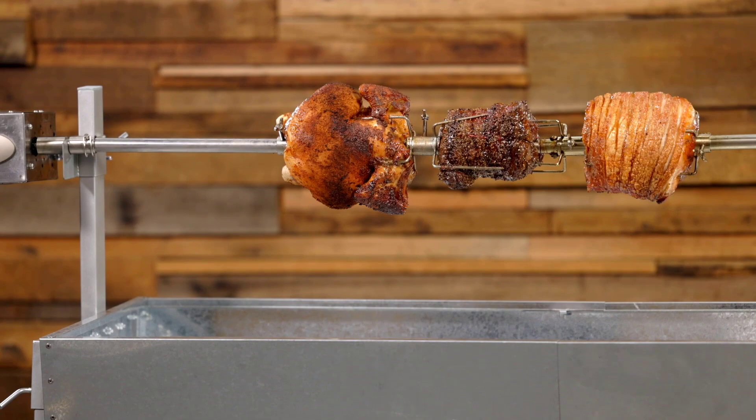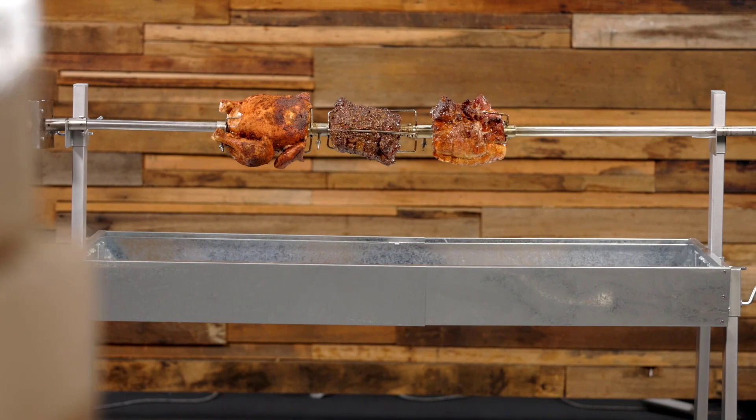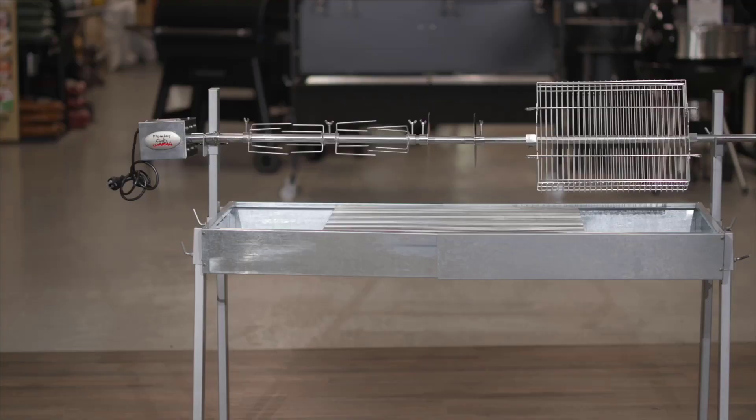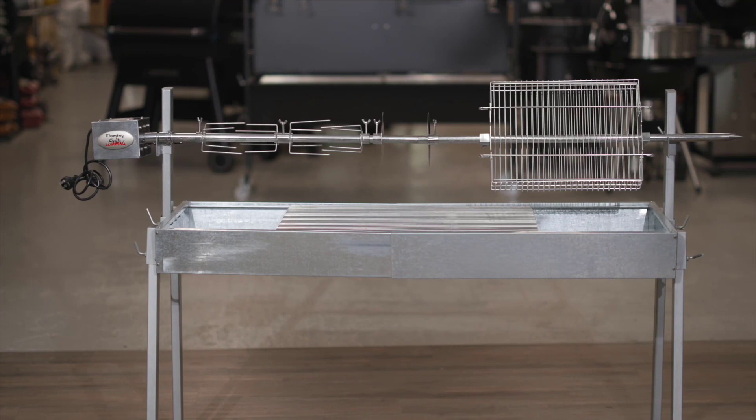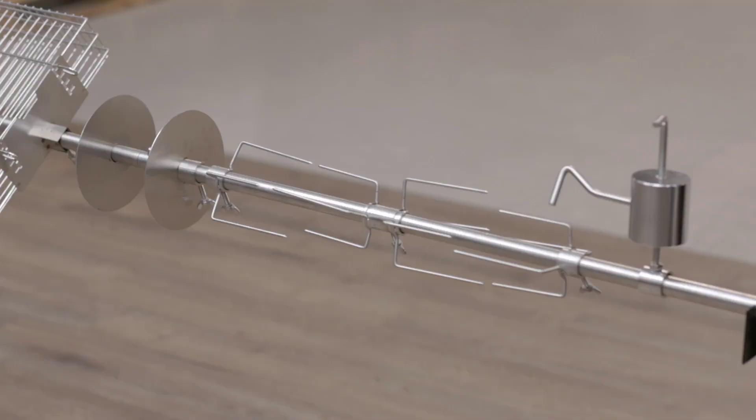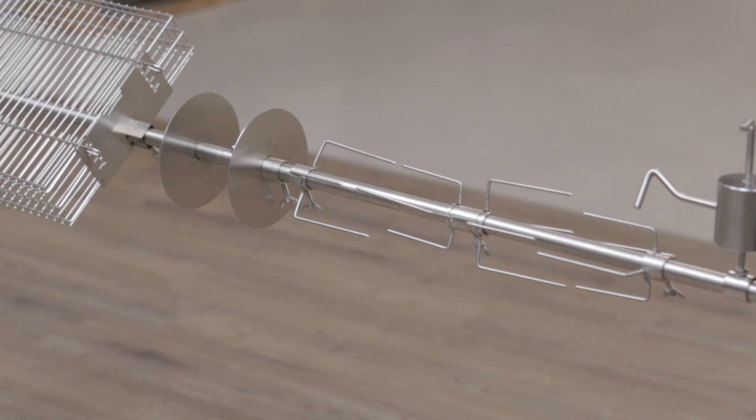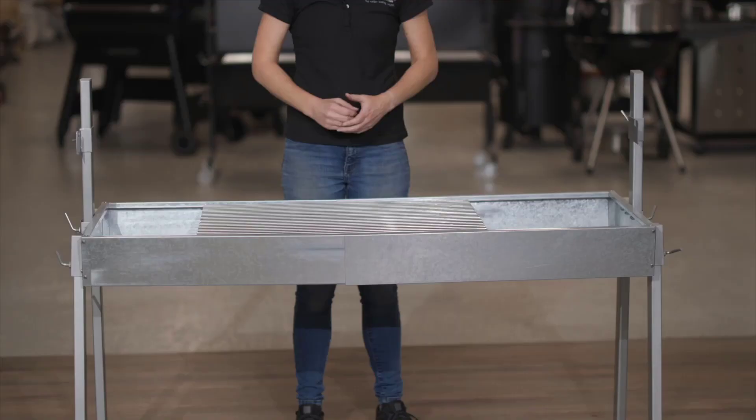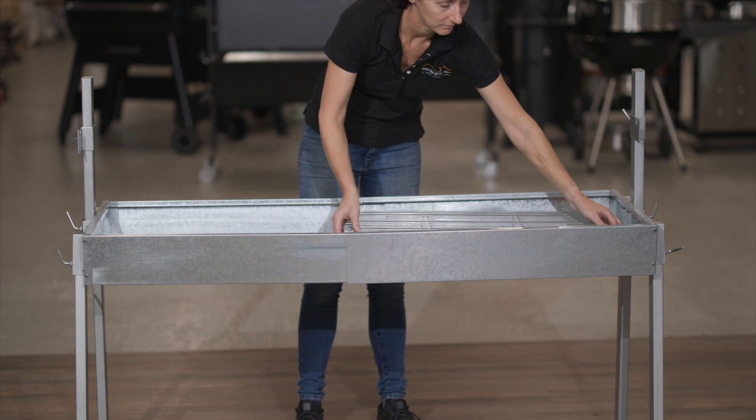The rotisserie skewer included with the Extendable Spit is 22mm round in diameter and there are a range of optional extras available depending on what you're planning on cooking. Accessories include chicken prongs for cooking chickens and roasts, gyro discs for suvlaki style shaved meat, counterbalance weights to help balance whole animals, leg brackets to attach the legs of the animal to the skewer and baskets to cook pork belly and so much more.